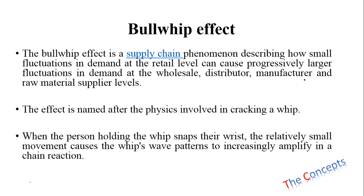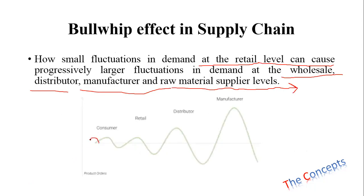The bullwhip effect is a supply chain phenomenon describing how small fluctuations in demand at the retail level can cause progressively larger fluctuations in demand at the wholesale, distribution, manufacturer, and raw material supplier level. This phenomenon comes from the subject of physics. The effect is named after the physics involved in cracking a whip — when a person holding a whip snaps their wrist, the relatively small movement causes the whip's wave pattern to increasingly amplify in a chain reaction.